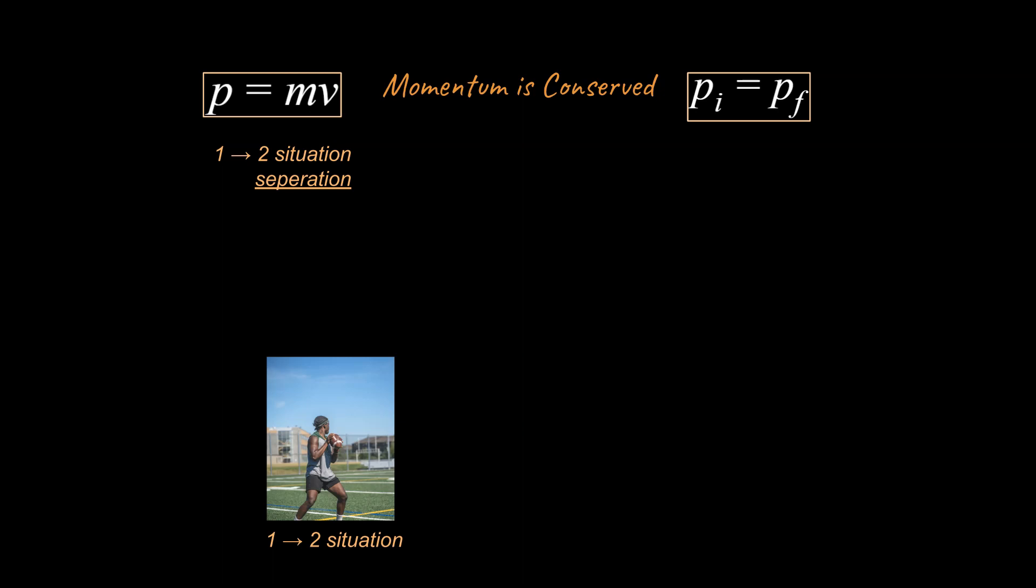You have the quarterback throwing the football. We called that a one-to-two scenario. This one helps us recognize how many mathematical terms we're going to have on the left side of the equation, and this two helps us recognize how many objects we have and how many mathematical terms we're going to have on the right side of the equation.